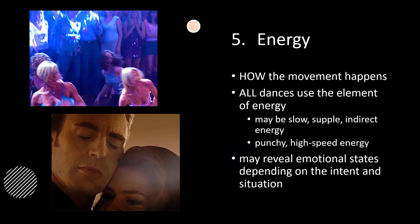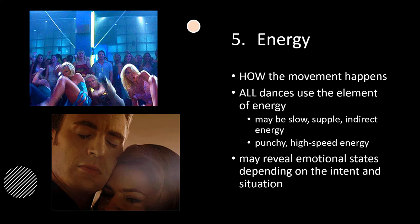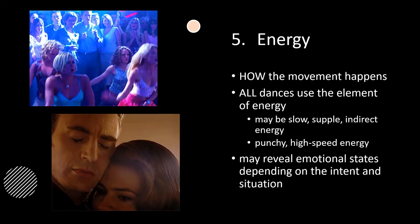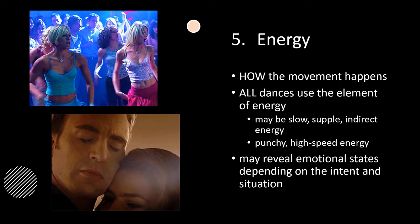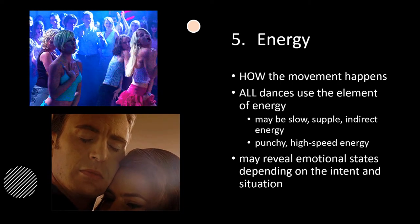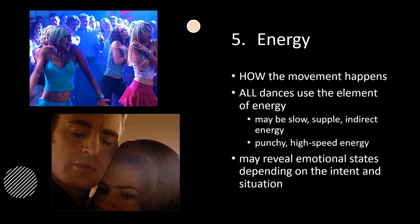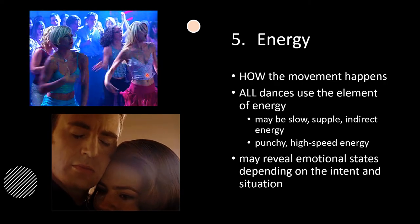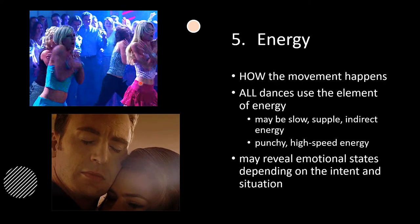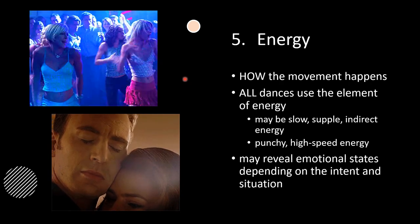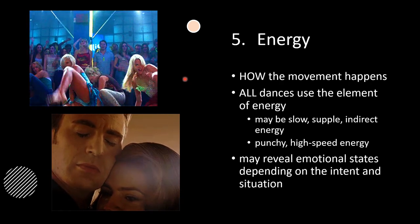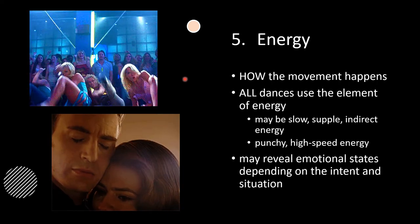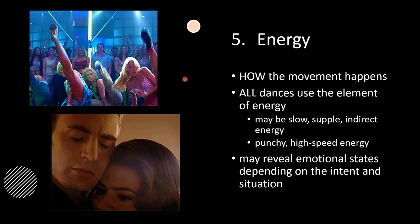The last element of dance is energy. Energy is about how the movement happens. All dances use the element of energy, though in some instances it may be slow, supple, and indirect — not the punchy, high-speed energy of a fast tempo dance. Energy choices may also reveal emotional states. For example, a powerful push might be aggressive or playfully boisterous depending on the intent and situation.